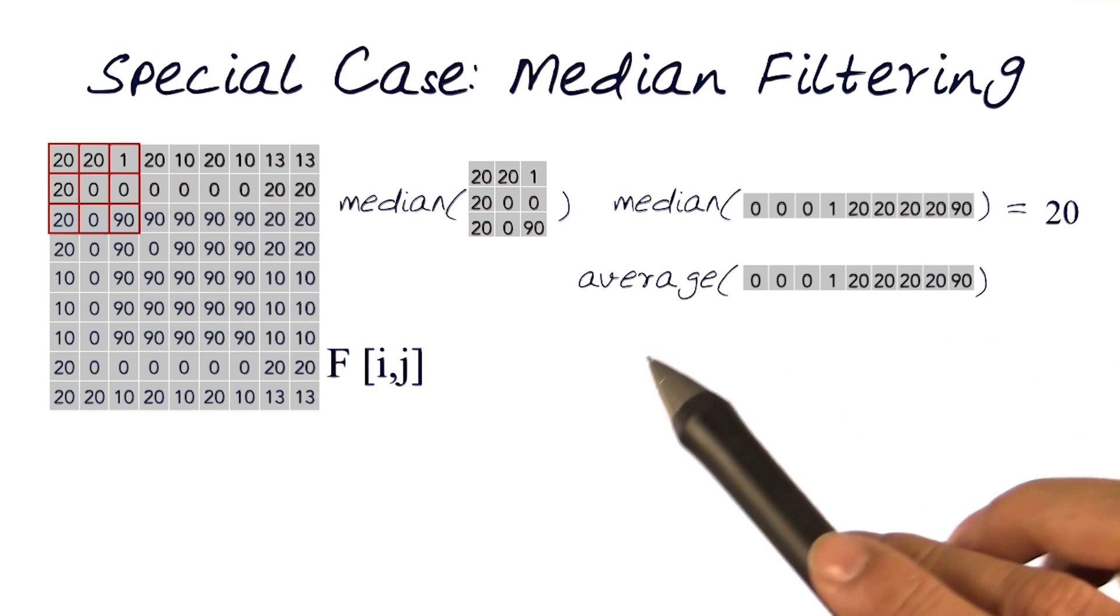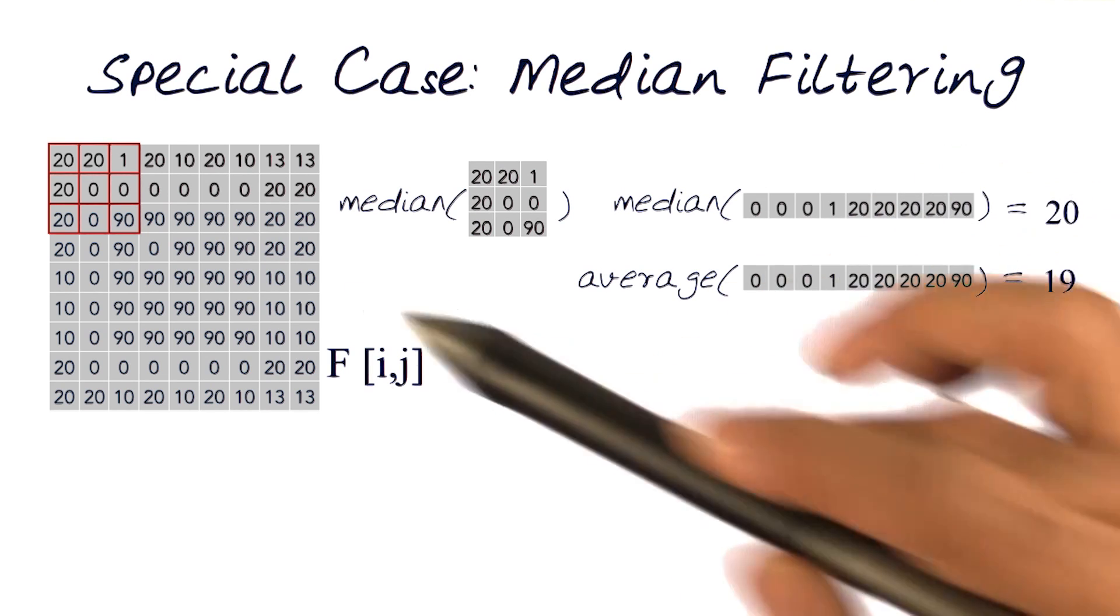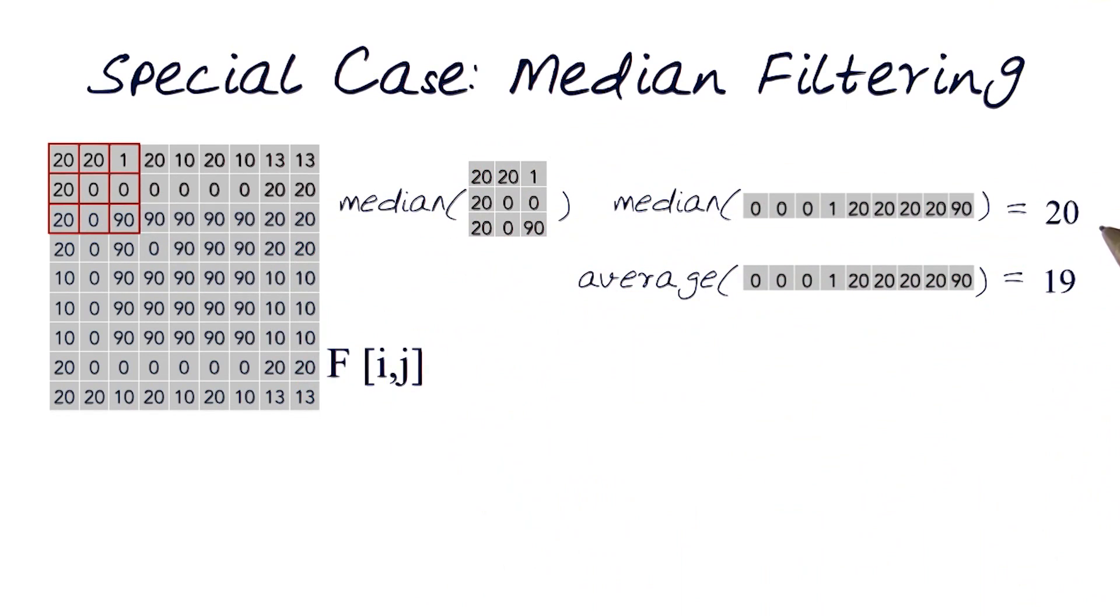Just to compare, the average of this signal would have been equal to 19. So, of course, just by doing median versus averaging, we've changed the intensity value of that output that I want to put in the output image by 1.